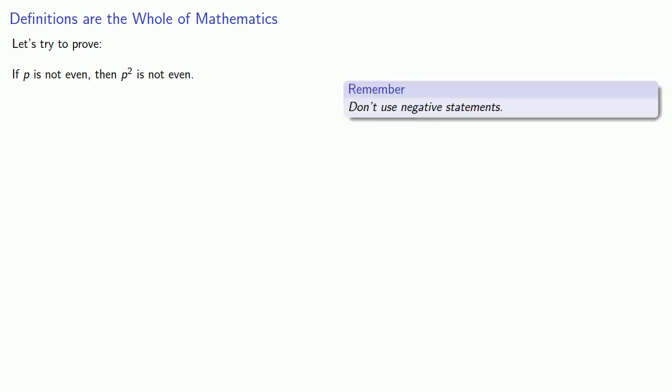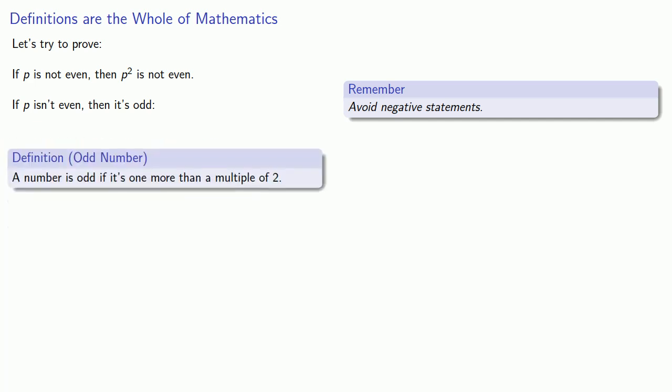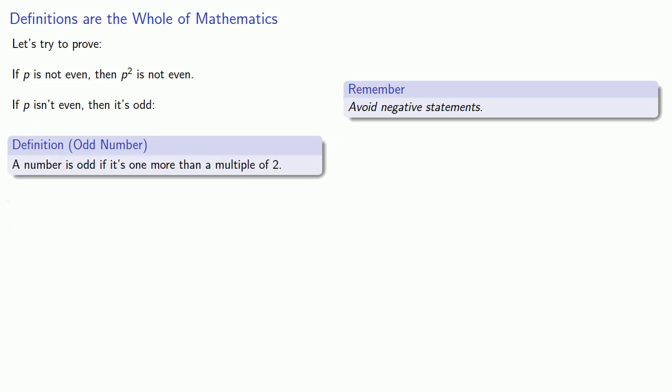Well, remember, definitions are the whole of mathematics. Let's try and prove that contrapositive. Now, a useful idea to keep in mind is avoid negative statements. And the reason is that a positive statement tells you something, a negative statement doesn't. Well, if p isn't even, then it's odd, and so we need a definition for what it means to be an odd number. And we might try something like, a number is odd if it's one more than a multiple of two.